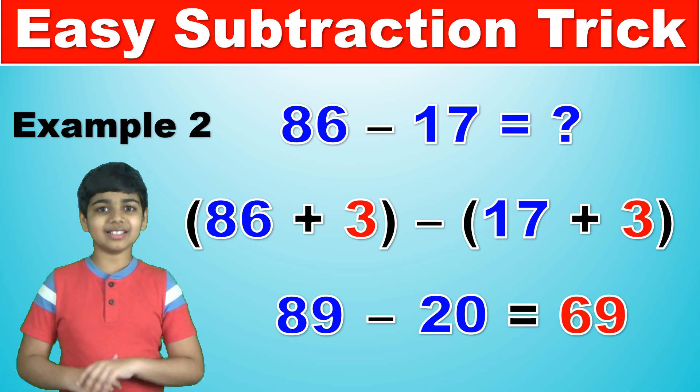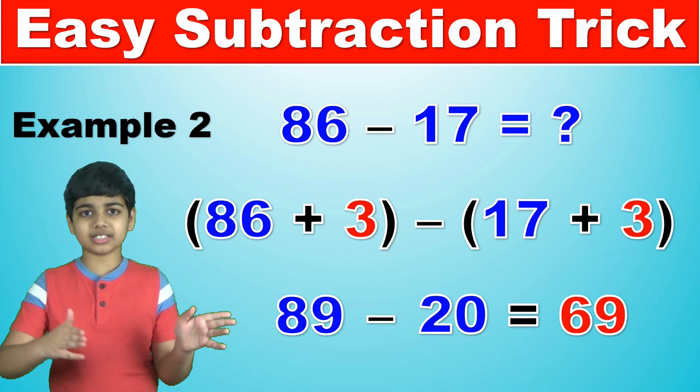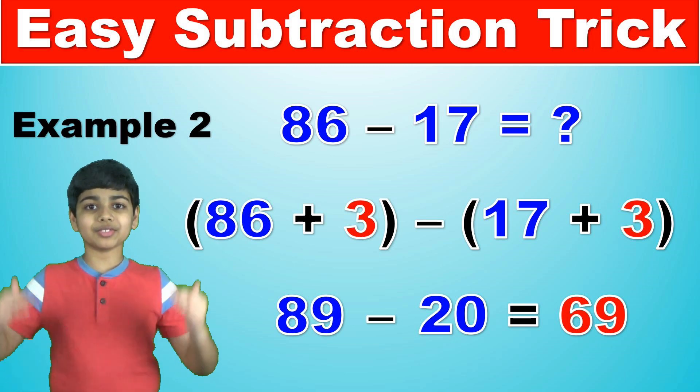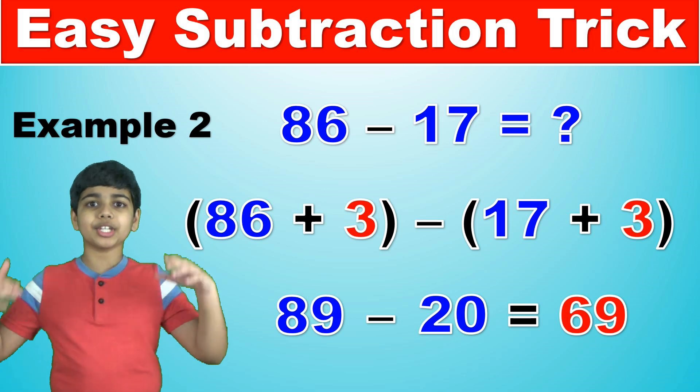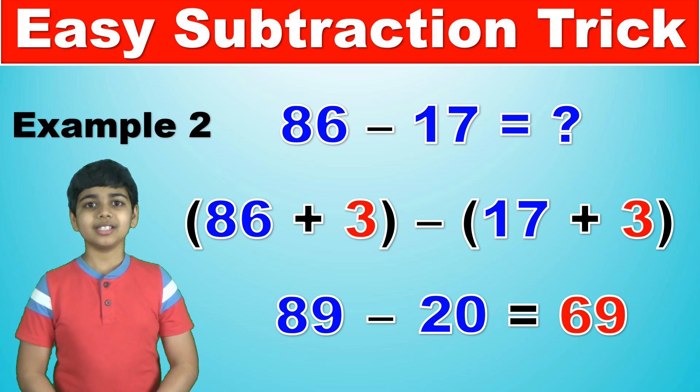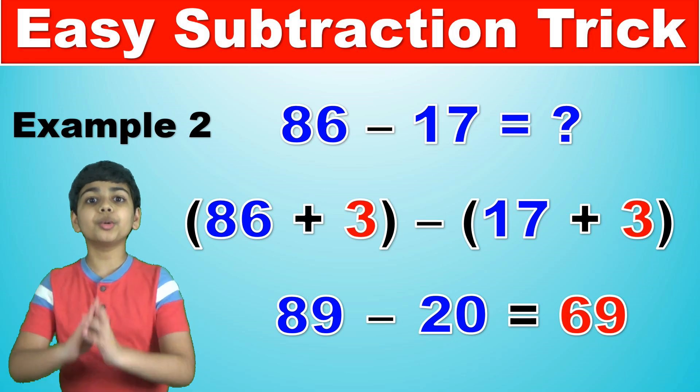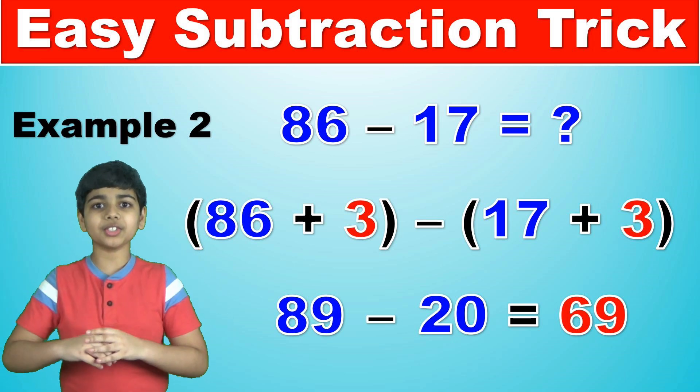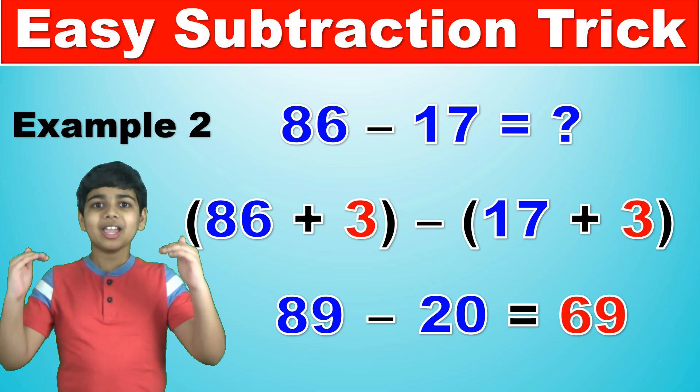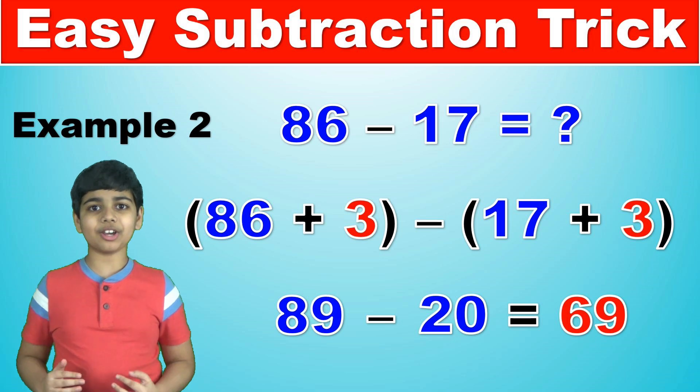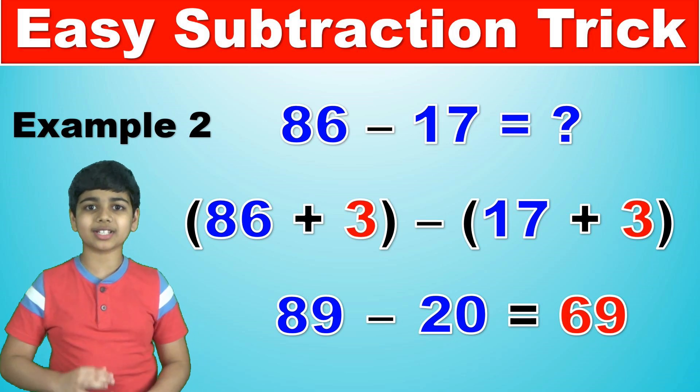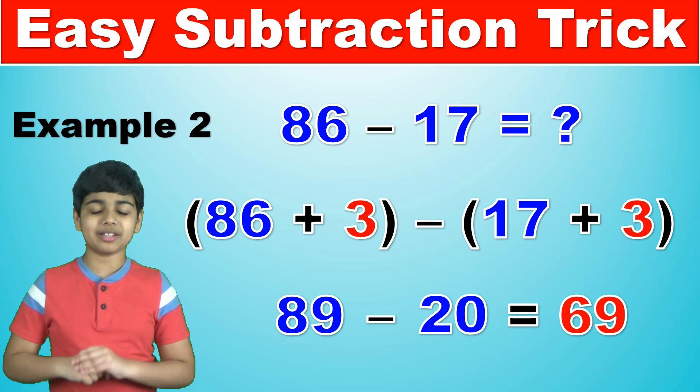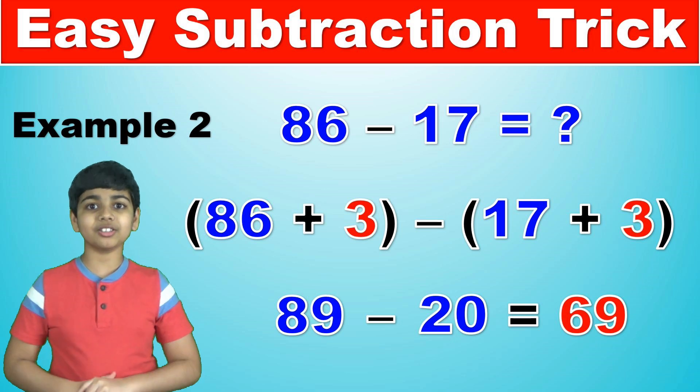So yet again here, if you subtract 86 minus 17 with 89 minus 20, the answers of both of these equations is the exact same. They are both 69. And the reason why is because all we're doing is adding 3 to both of them. We are increasing them by the same amount. So the difference is the same, no matter how high or how low we go. As long as we're just adding or subtracting the same amount to both of the numbers, the difference will remain the same.